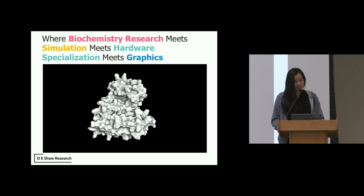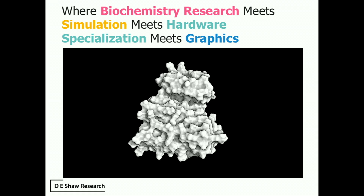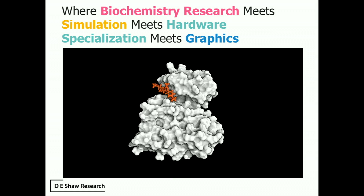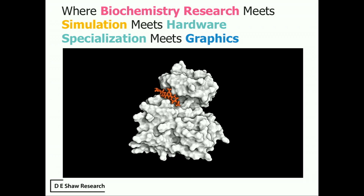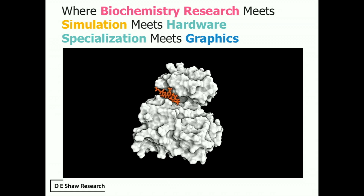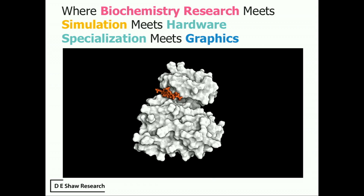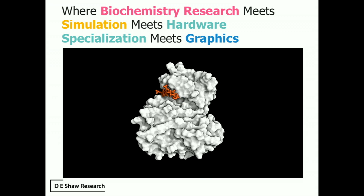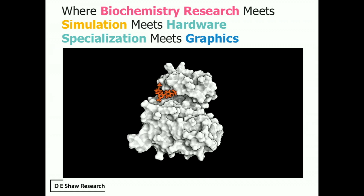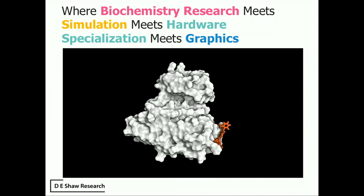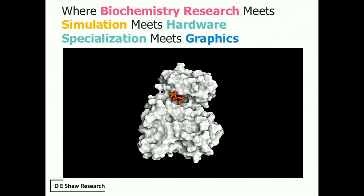Here we have a cancer drug, shown in orange. It originally starts out in free solution and eventually finds the binding pocket of this protein. This is a process that had never been seen before without molecular dynamic simulation. But now we can easily visualize what is going on as this cancer drug is binding to its target protein.